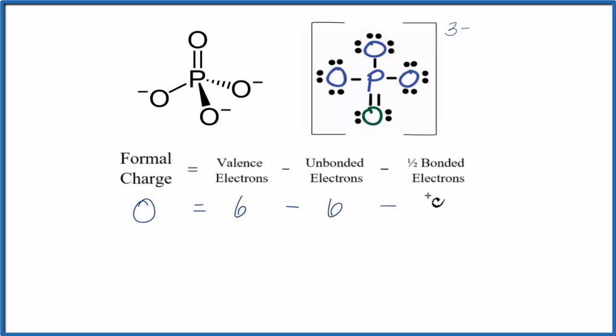Then we subtract one half of the bonded. That's the electrons between the phosphorus and the oxygen here. So this line represents a pair of valence electrons. We have two of those. 6 minus 6 is 0 minus 1. That equals minus 1. So this oxygen here, its formal charge is minus 1. Since these oxygens here are identical, they also have a minus 1 formal charge.